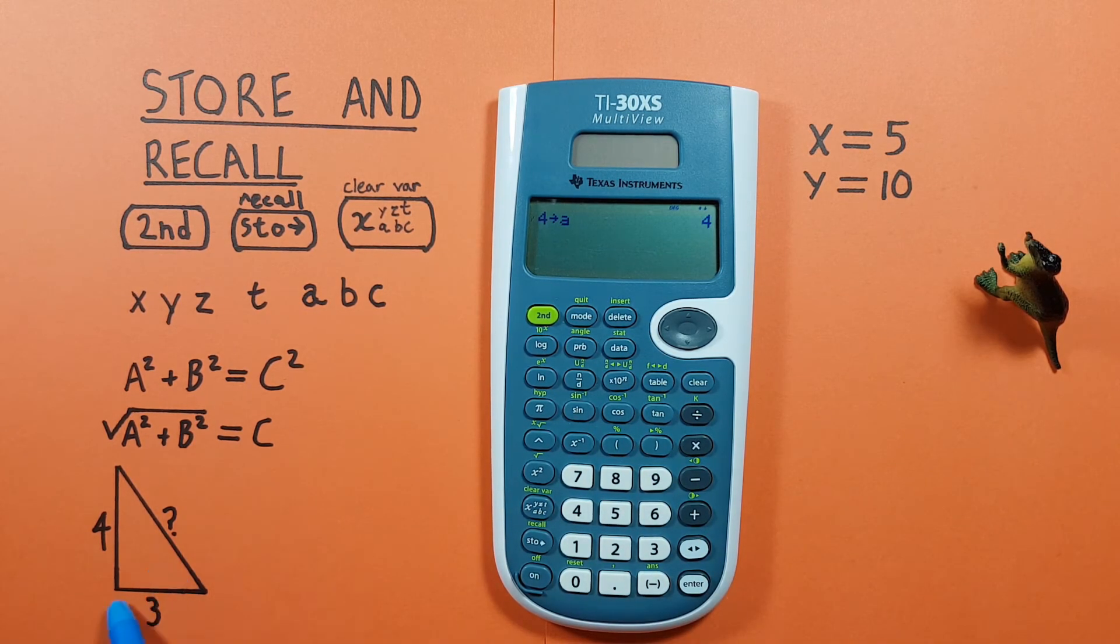And then our b is 3. So again, place 3 on the screen, store, cycle to b, and press enter.